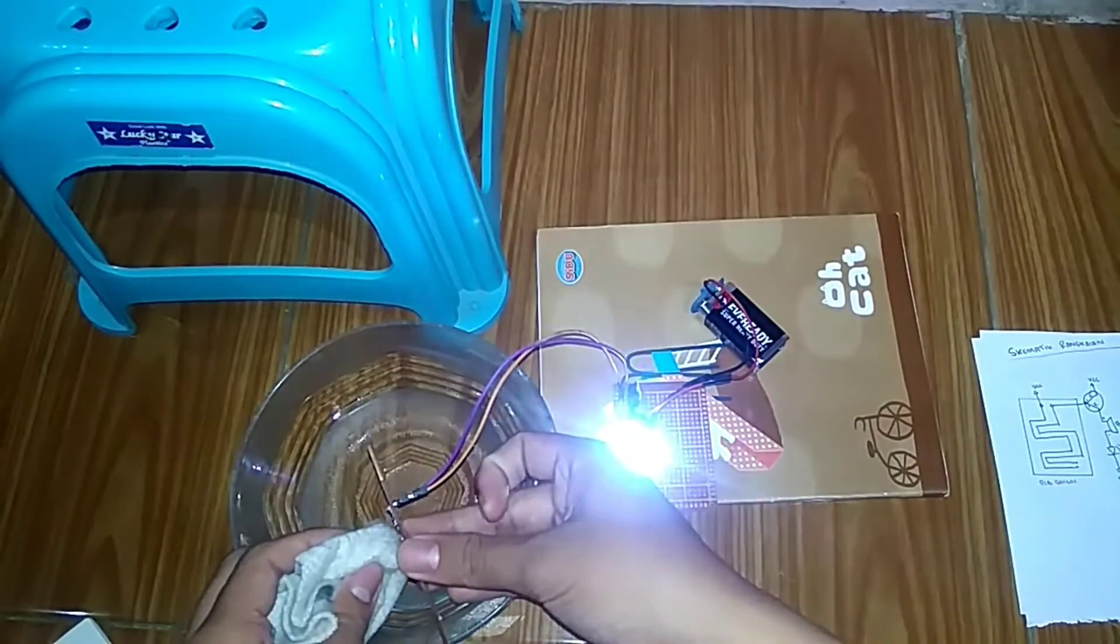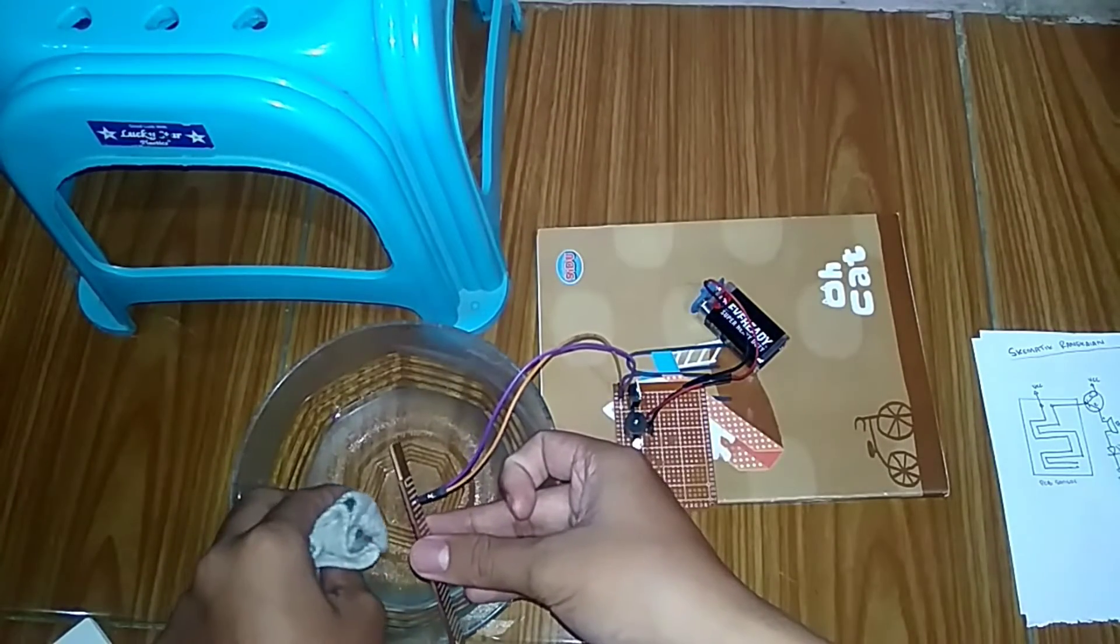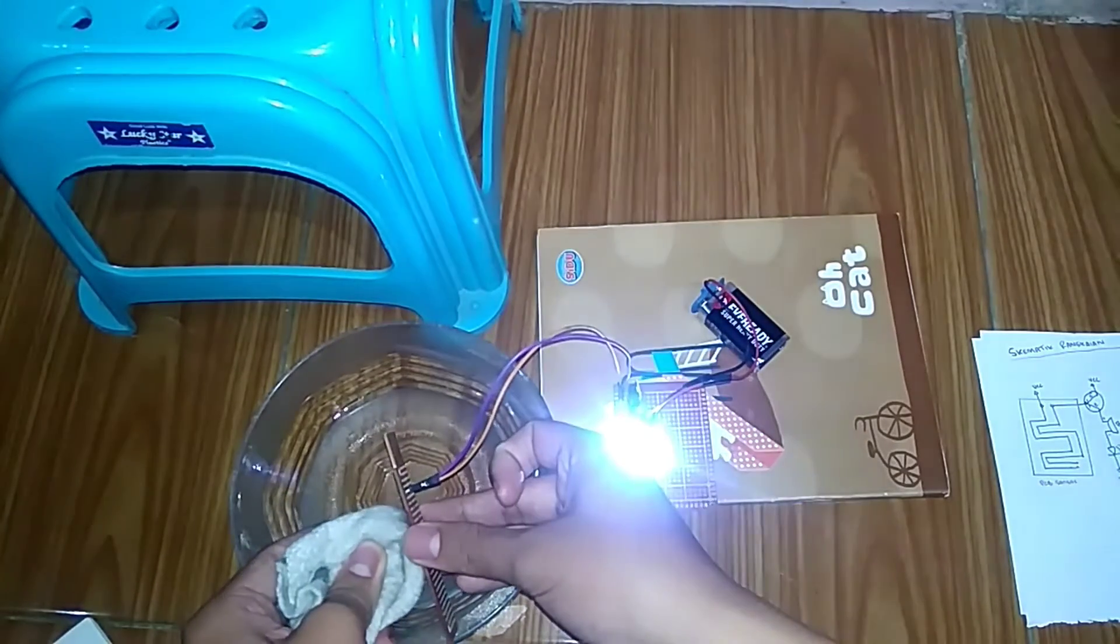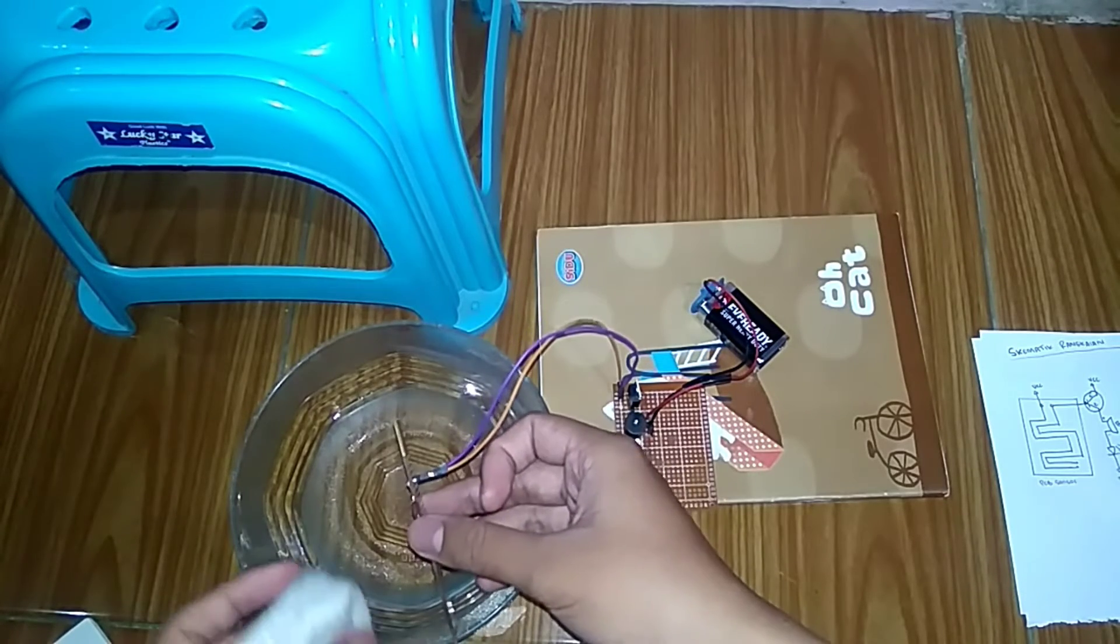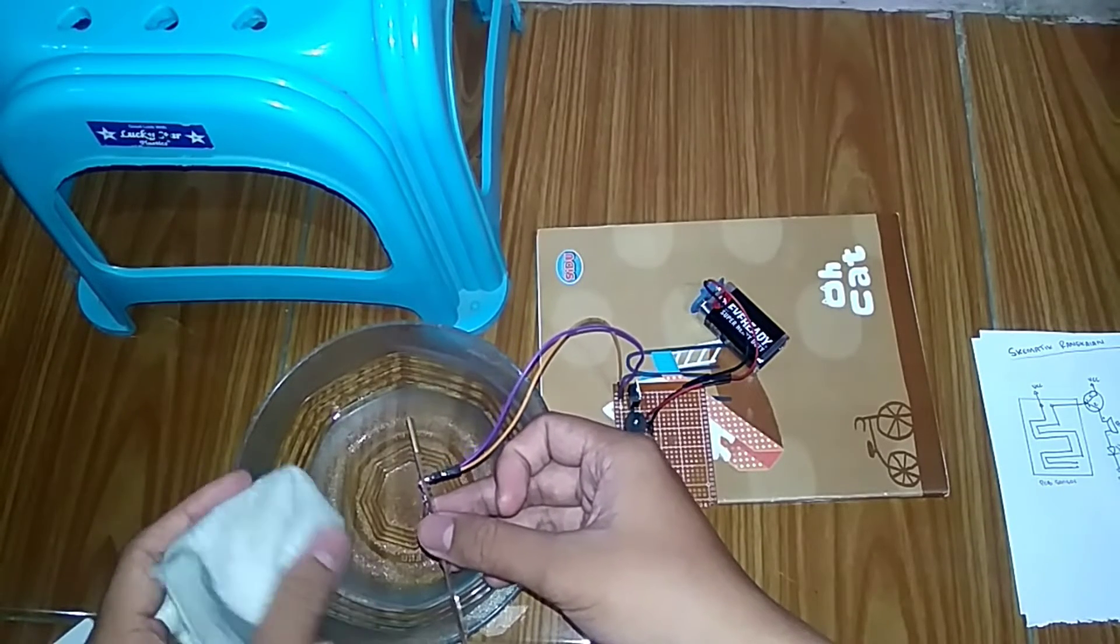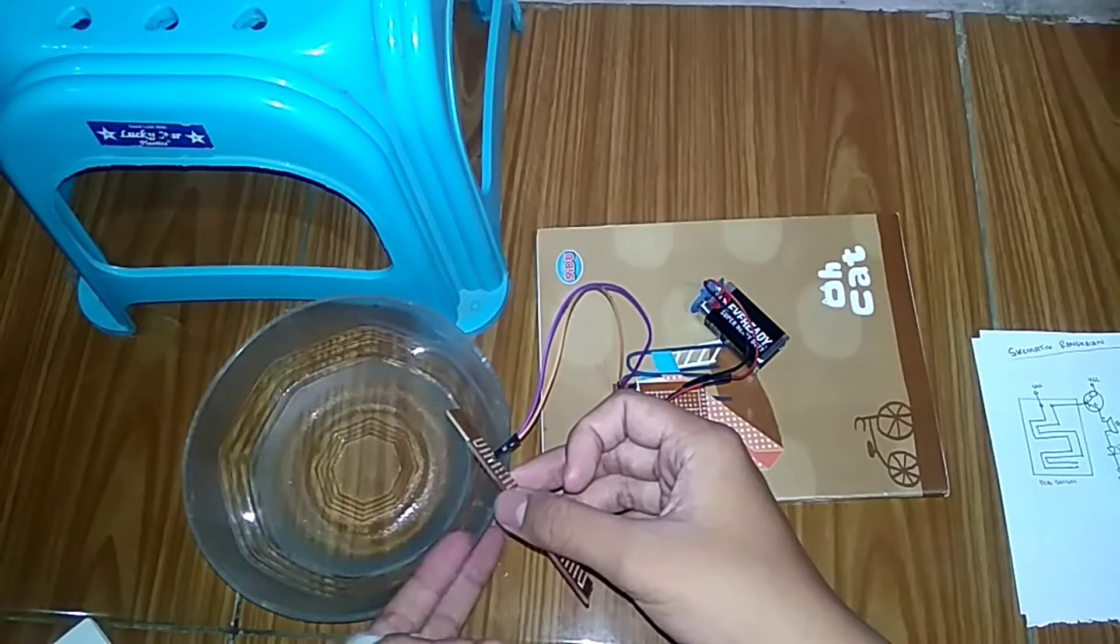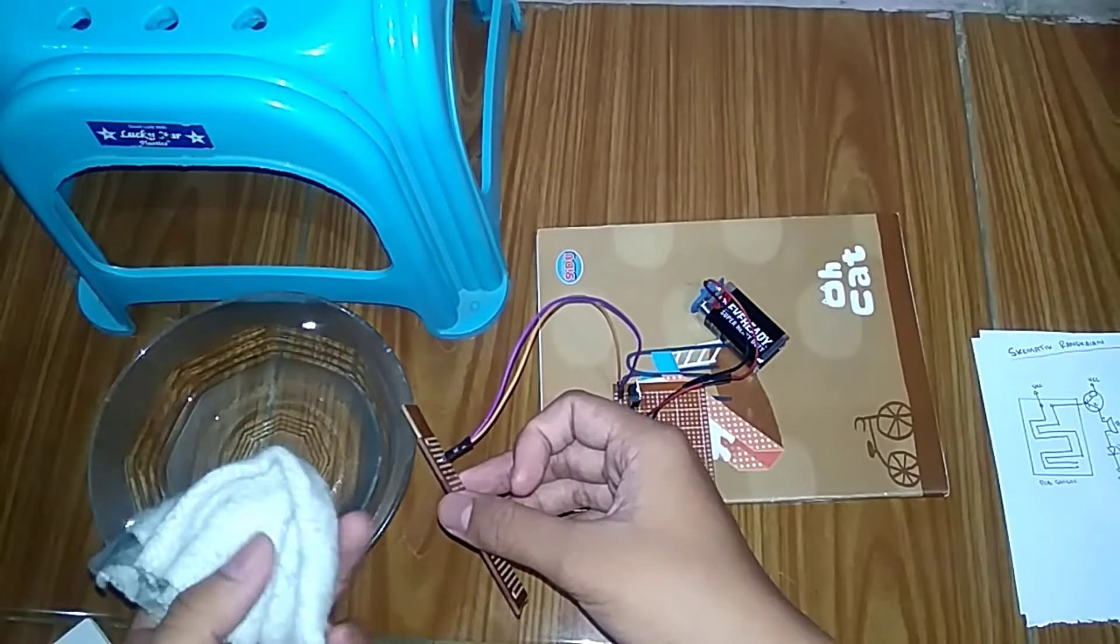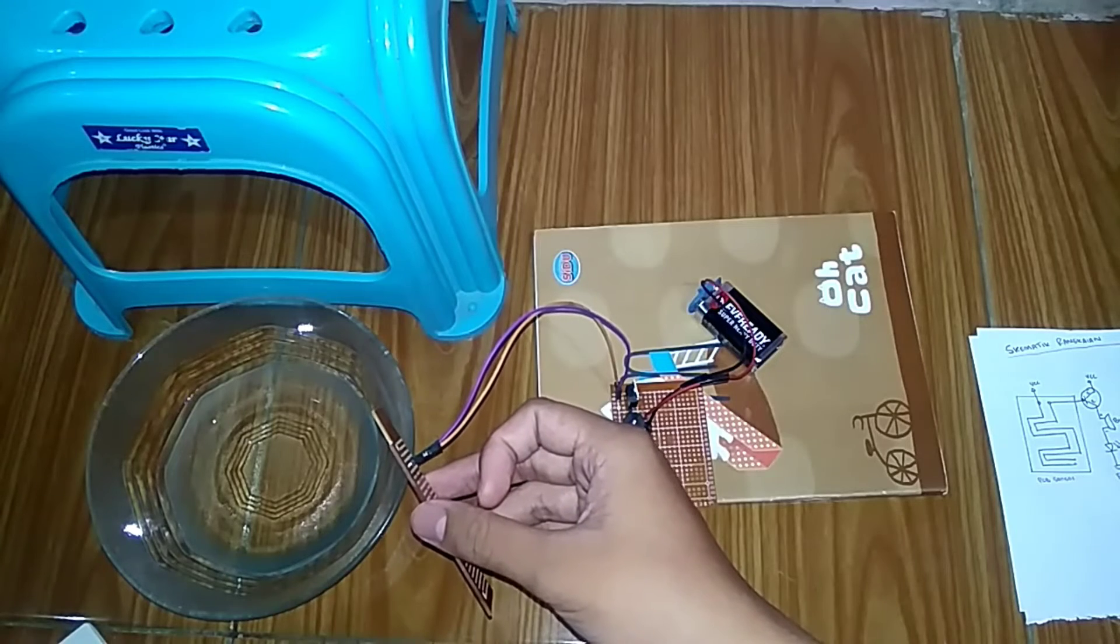The circuit will light up. Now we wet it again. See, the component lights up very brightly and buzzes very loudly. Therefore, this is the working principle of the schematic circuit, where when the sensor is given water or touched with water, the buzzer and LED will activate.